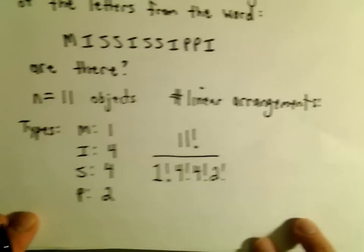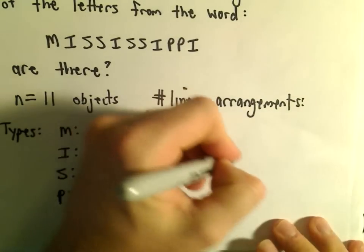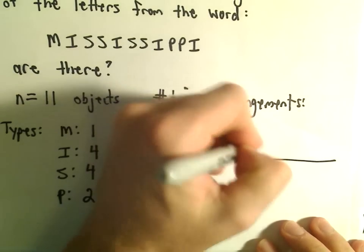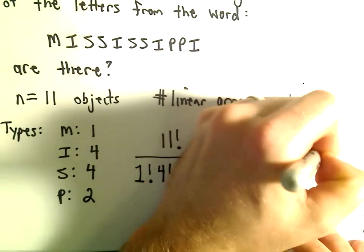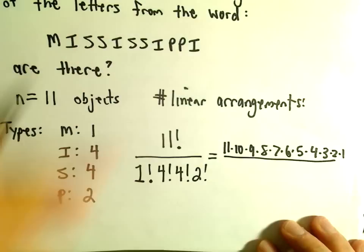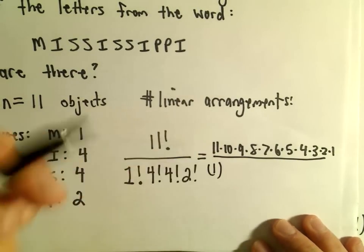I do not have a calculator. Let's see if we can't do this by hand. So 11 factorial, that's just 11 times 10 times 9 times 8 times 7 times 6 times 5 times 4 times 3 times 2 times 1.